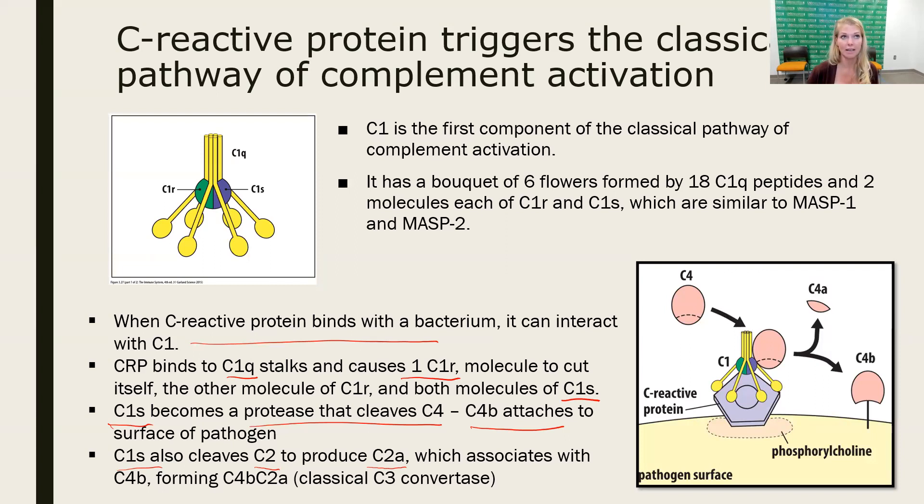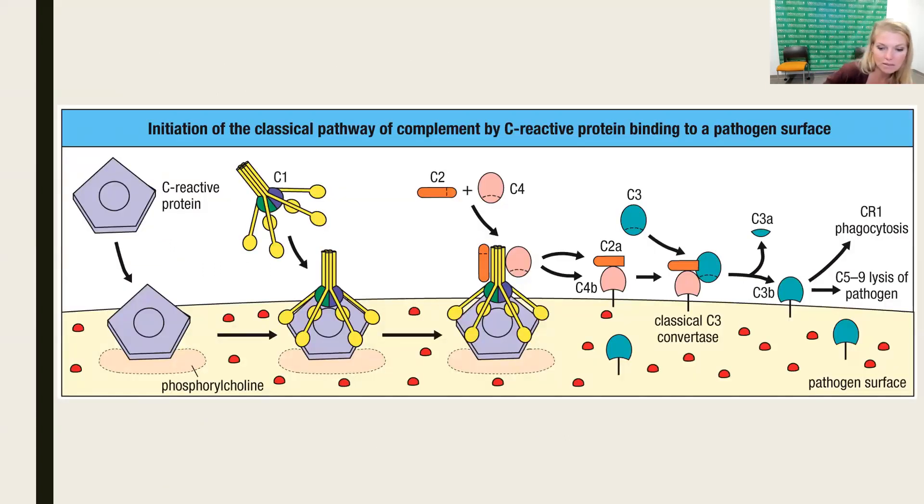Here is a diagram showing all of that in one place. We have C-reactive protein near the surface of the pathogen. We have C1 binding to the surface of C-reactive protein, then we have C1R cleaving itself, which will then cleave C1S. C1R will also cleave C4. C1S will cleave C2. C4A will go away, C2B will go bye-bye, and then we have our C3 convertase of the classical pathway.